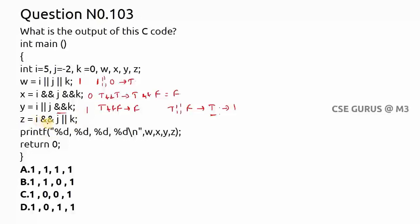For z equals i && j || k: && has higher priority, so evaluate i && j first. i=5 is true, j=-2 is true. True && true = true. Then true || k: k=0 is false. True || false = true, which is 1. So printing w, x, y, z gives 1, 0, 1, 1. Option D is the correct answer.